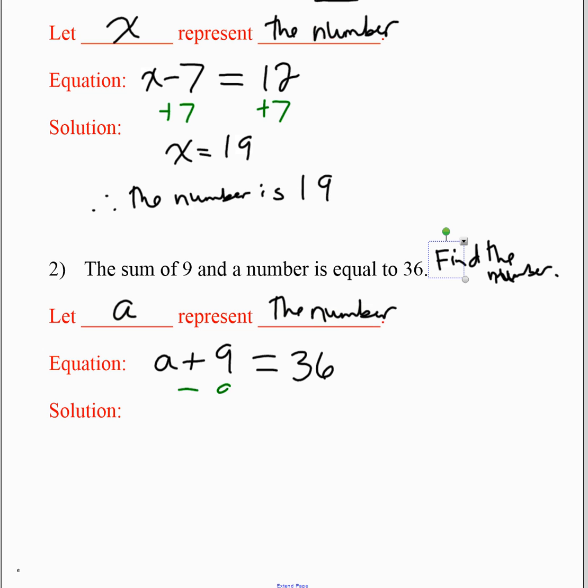Now we need to solve so we can find the number. To solve, we take away nine and we have to do that to both sides. And you're left with a equals 27. And that's your answer. And then you say, therefore, the number is 27.